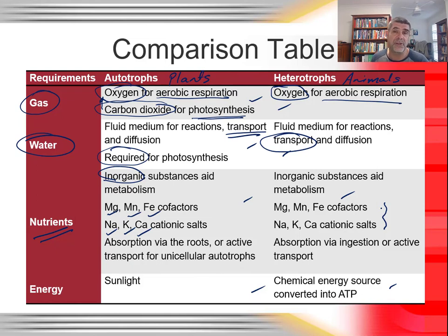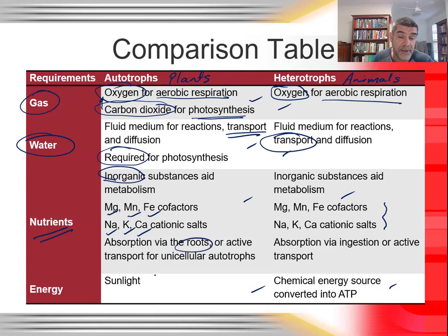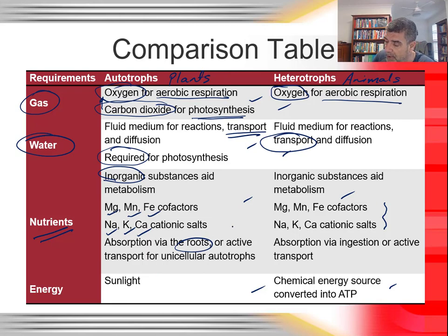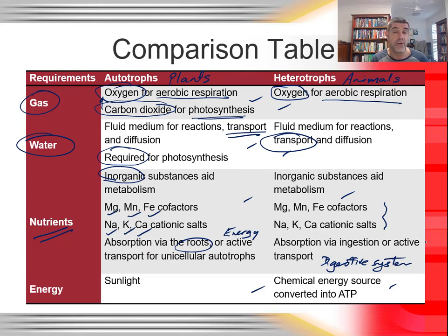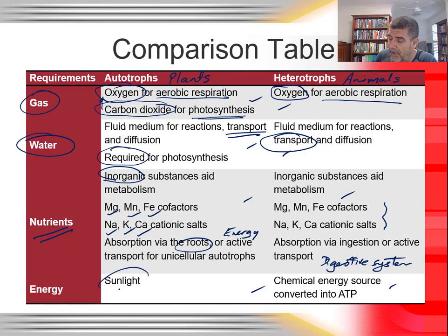Sodium and potassium are very important in humans as part of the nervous system response. In plants, nutrient absorption often occurs via the roots — ions dissolved in water are absorbed through the roots as water is taken up, or via active transport, which requires an input of energy to move substances against their concentration gradients. Heterotrophs also require nutrients, but they have digestive systems that break down food to release important organic and inorganic substances needed for their life processes.